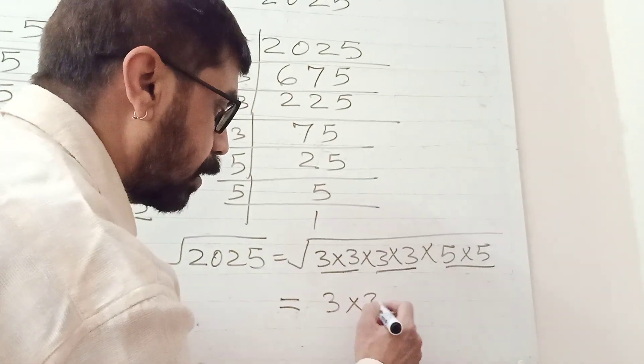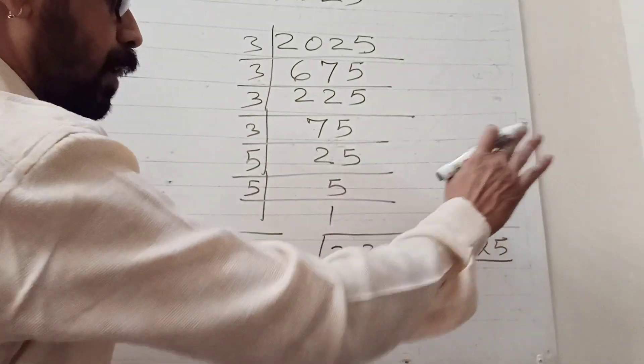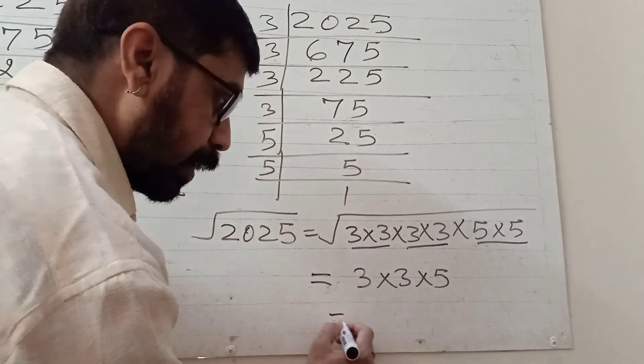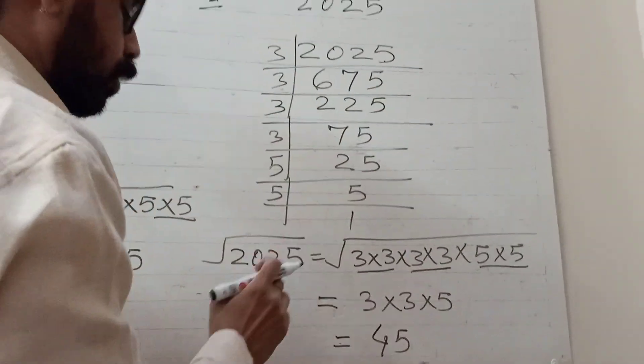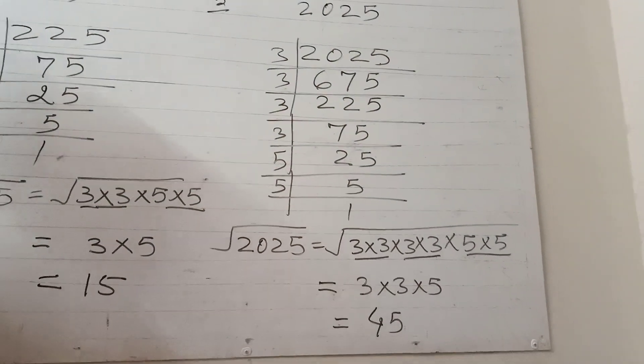3 times 3 times 5 equals 45. So square root of 2025 is 45. Bye.